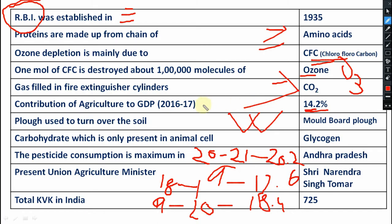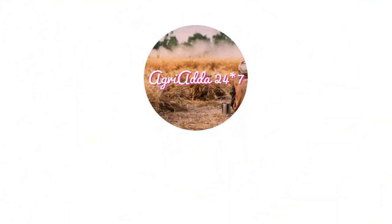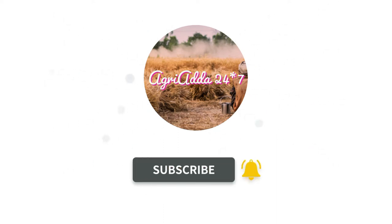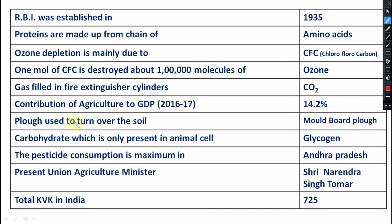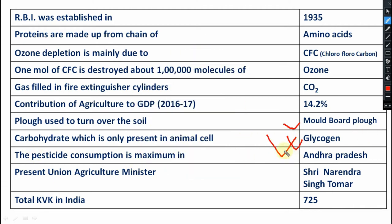Plow used to turn over the soil — that is your MB plow, mold plow. Carbohydrate which is only present in animal cells — that is your glycogen. Very very important. Pesticide consumption is maximum in Andhra Pradesh. Please remember this one.